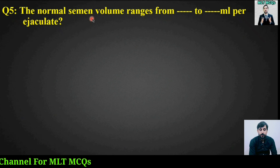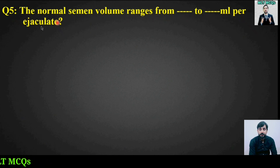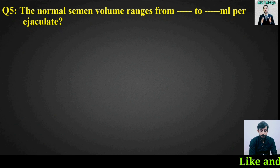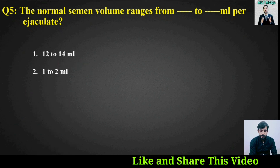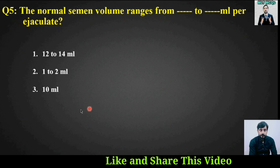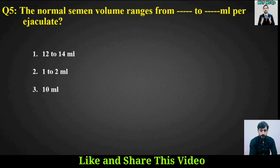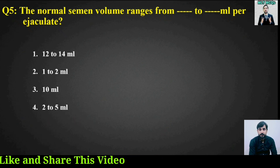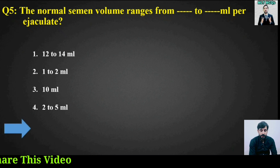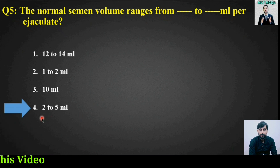MCQ number five: The normal semen volume ranges from how many ml per ejaculate? Options are: 12 to 14 ml, 1 to 2 ml, 10 ml, or 2 to 5 ml. The right answer is option number four — 2 to 5 ml.